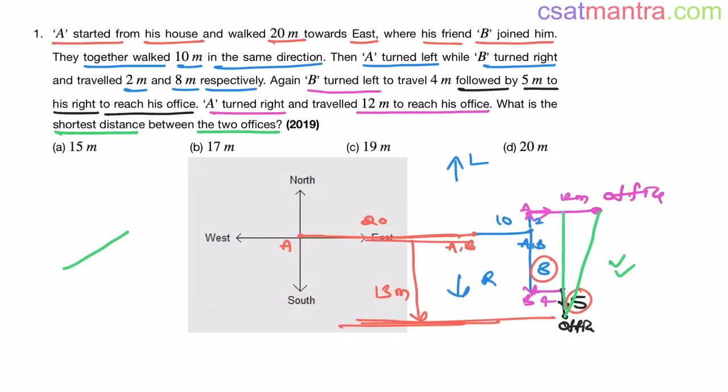Now see, this is a right angle triangle. This is 4 meters. That means this distance is 4 meters. Now what is this distance? 12 minus 4, that is 8. So this distance is 8. Now this distance is 13 meters and we have 2 meters here. So 13 plus 2, that equals 15.